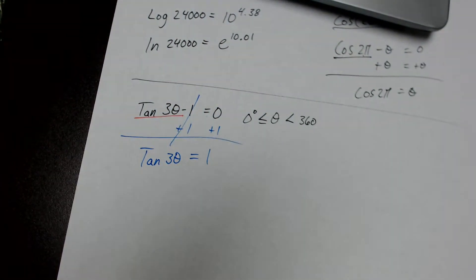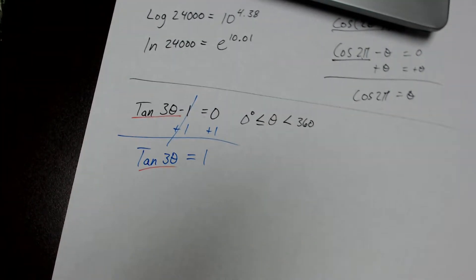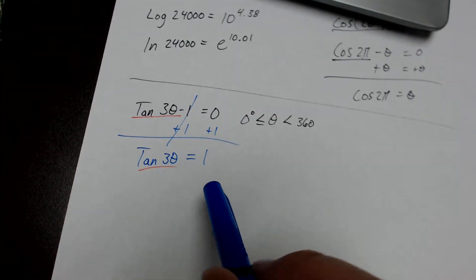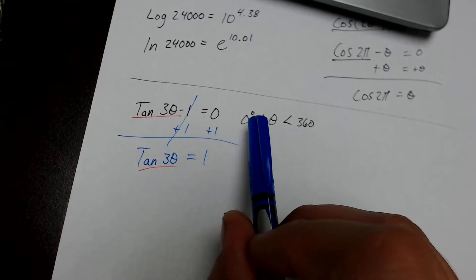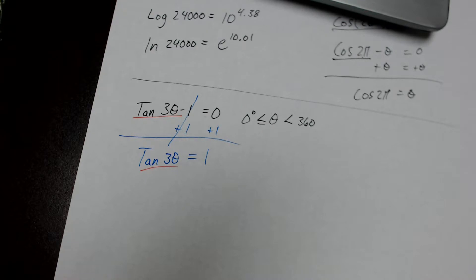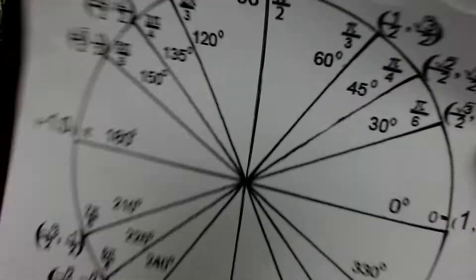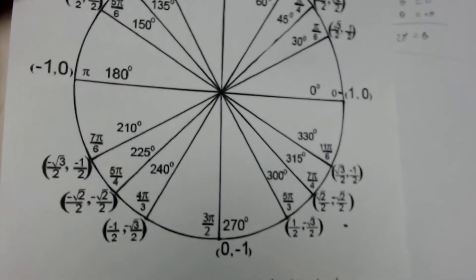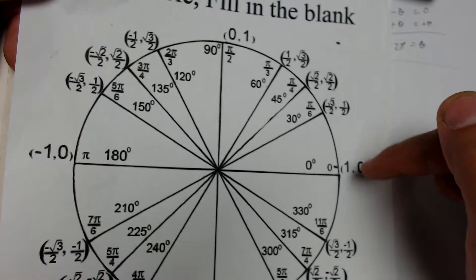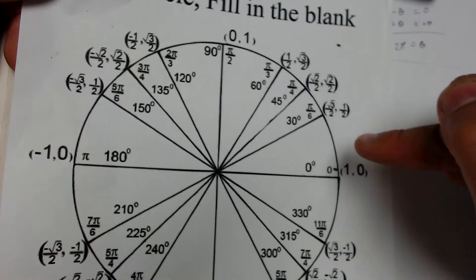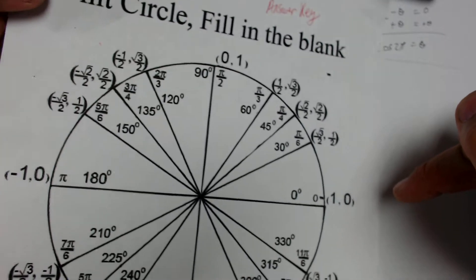So then what I'm left with is tangent 3θ equals 1. And again, tangent 3θ is inviolable, meaning we cannot break it apart. So we have to find, at this point, what we have to do is find out where tangent equals 1 in between 0 and 360. So, for sake of time on the video, we can either do this using reference triangles or referencing our unit circle. So if I look at my unit circle, I'm looking for values where tangent will equal positive 1. So I have to find values where the sine and the cosine are equal to each other.